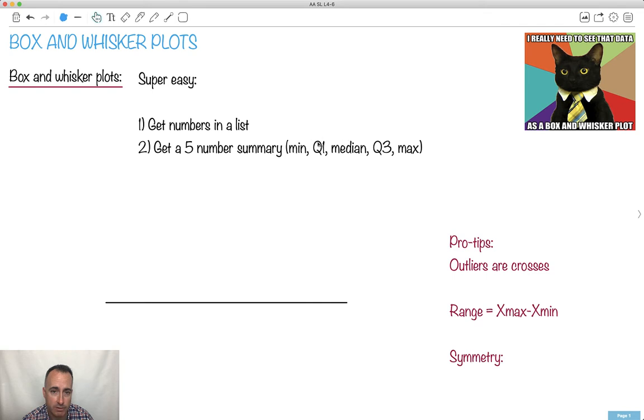You just have to get all the numbers in the list and get this five number summary. The minimum, the Q1 (first quartile), the median, the third quartile, and the maximum.